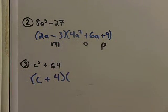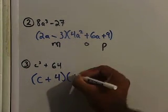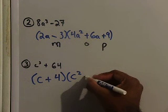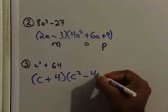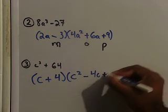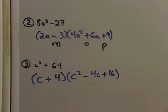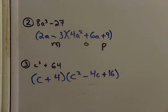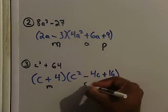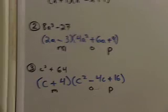And then I square C. I multiply the two together. And then I square 4. And once again, I'm using the MOP. I match the signs, I match those signs opposite, and then the last one is always positive.